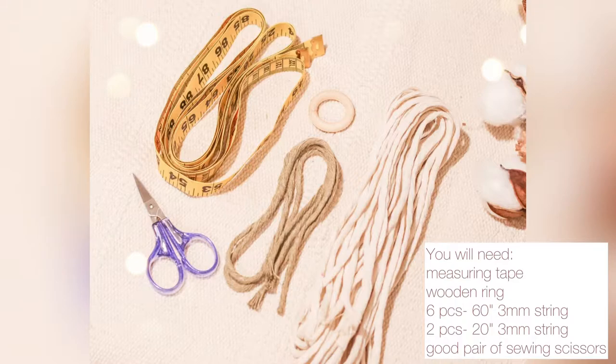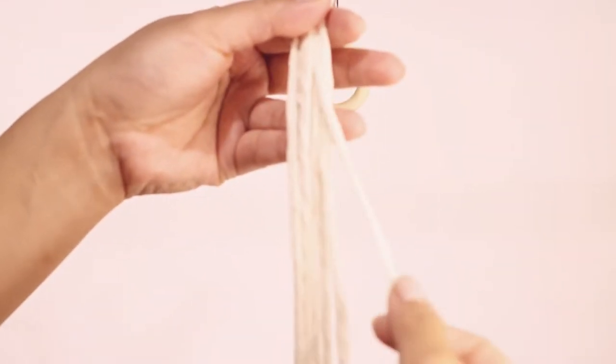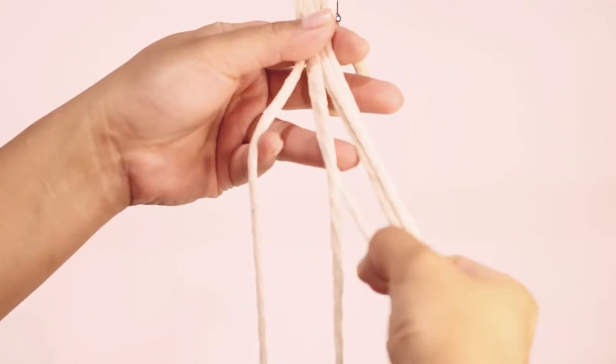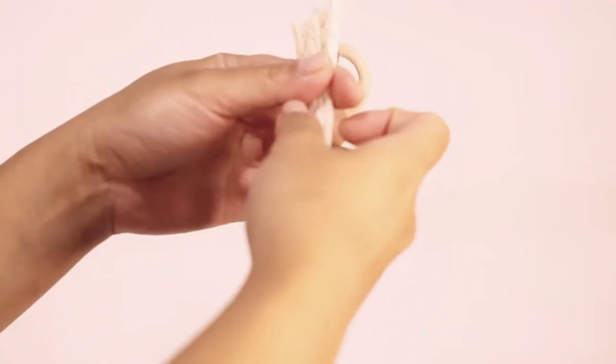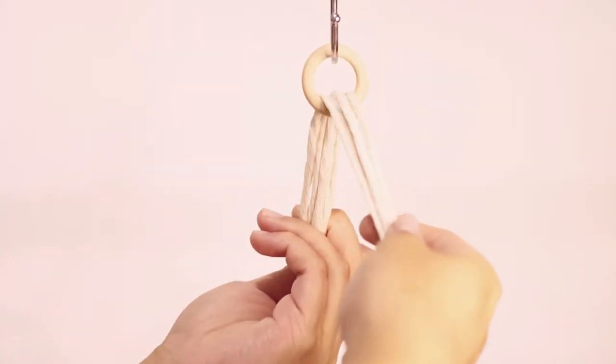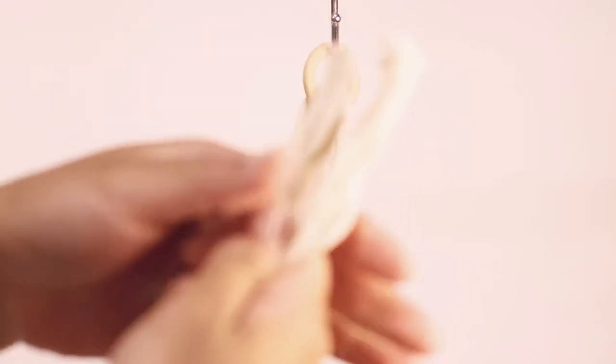Let's get started. First let's hang our wooden ring. Now we need our six pieces pre-cut 60 inch strings and into the loop. Gently pull your strings, making sure all the strings at the bottom are even.